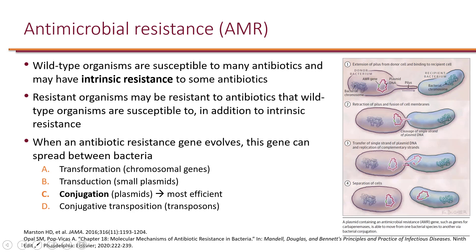When bacteria develop resistance, not only can they pass these resistance genes when they divide, but they can also pass them to other species. The transfer of resistance genes occurs generally through four different mechanisms.